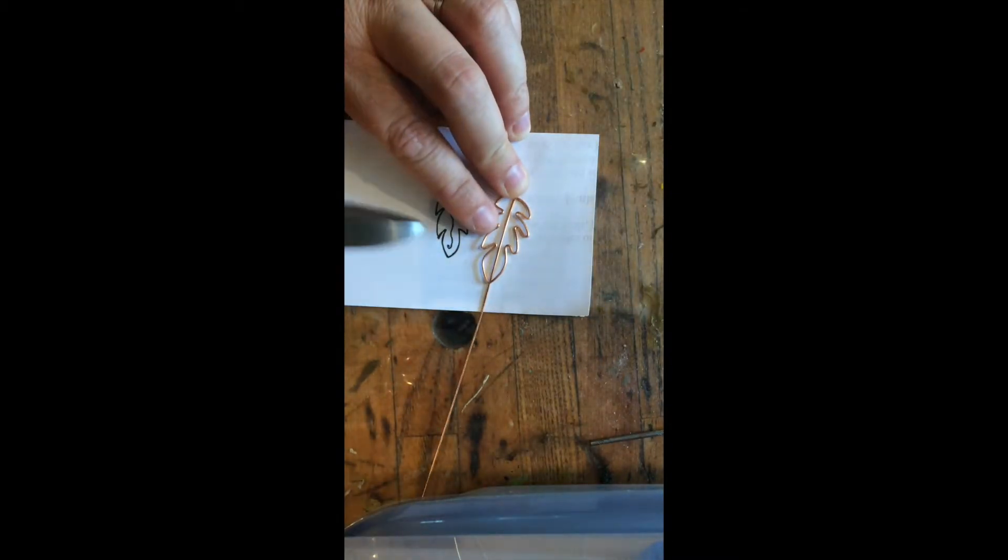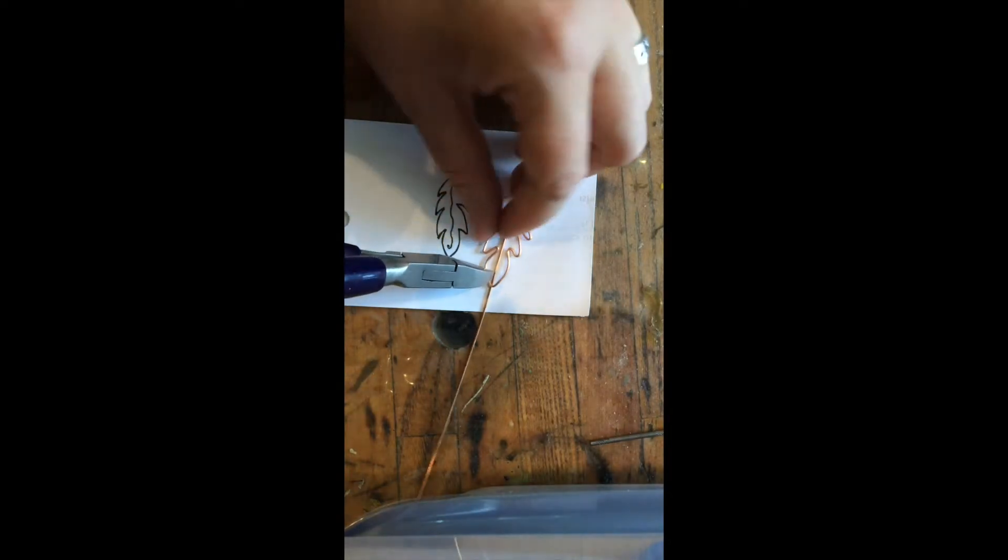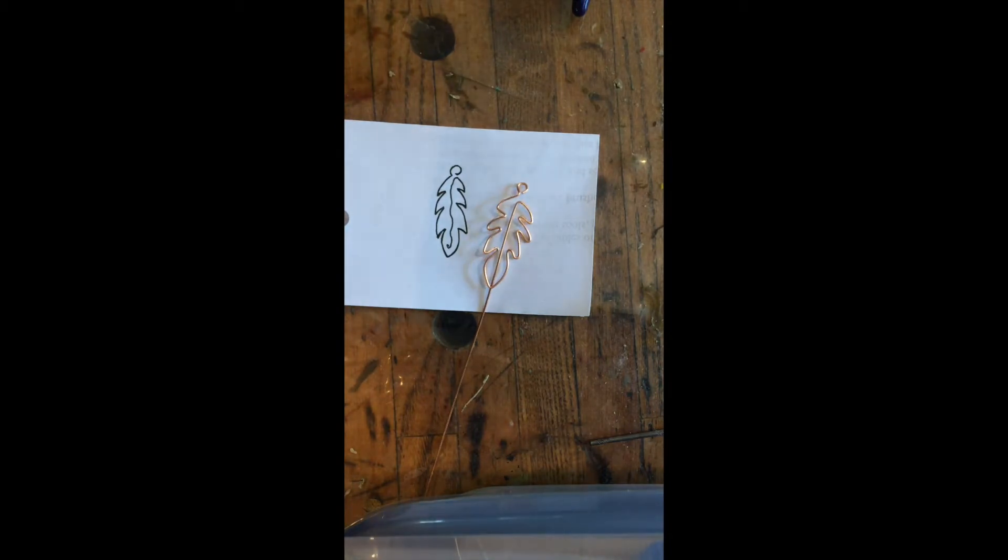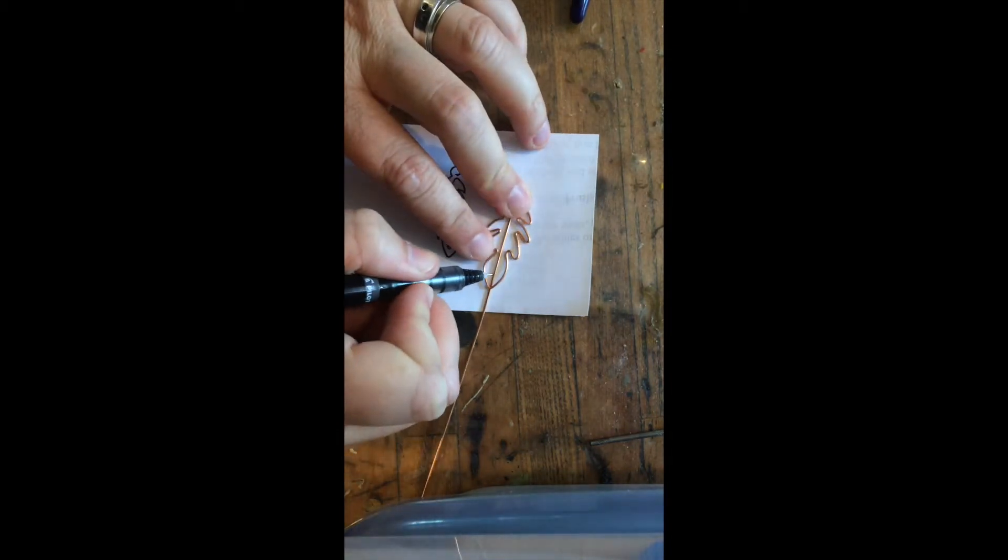Right in the spot where I want to cut it, you can mark it with a Sharpie or you can just go ahead and grab it. I'm going to mark it with my marker here, right in this spot.